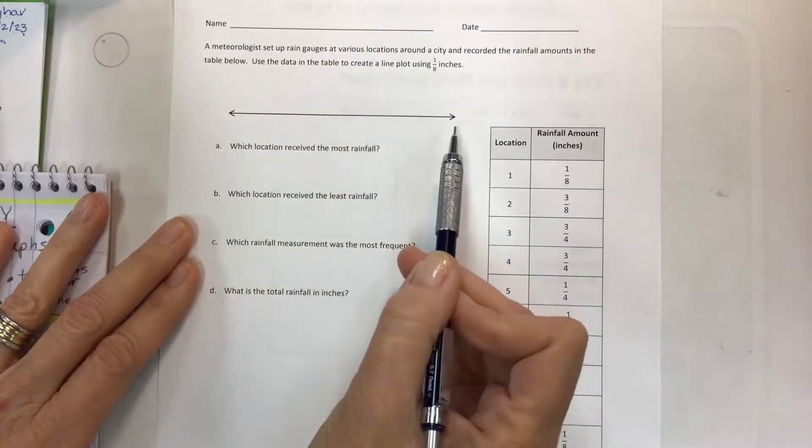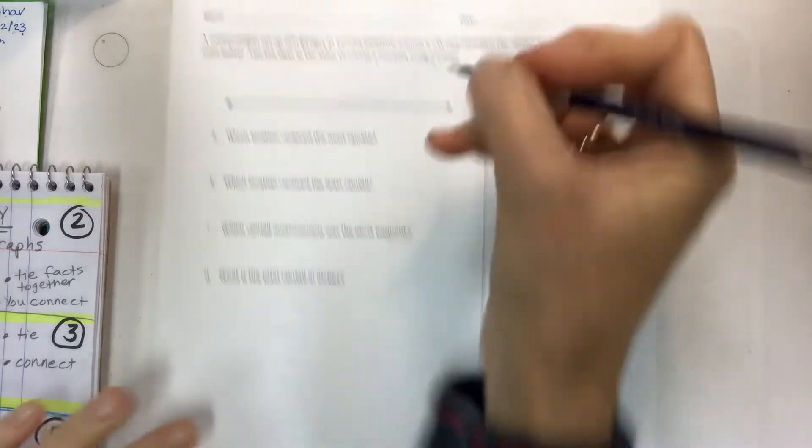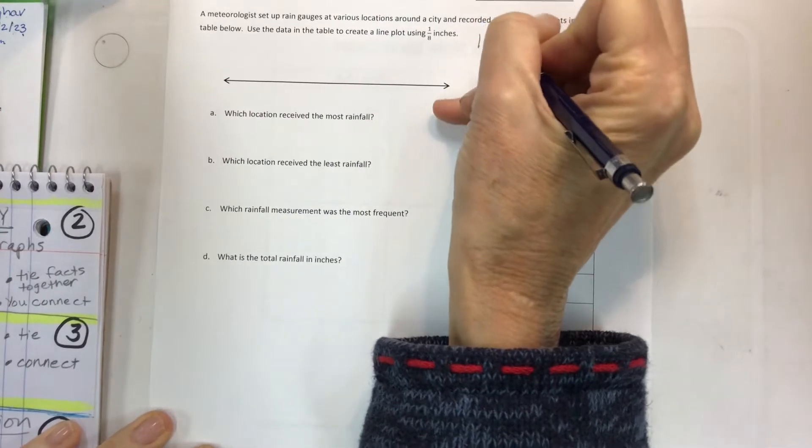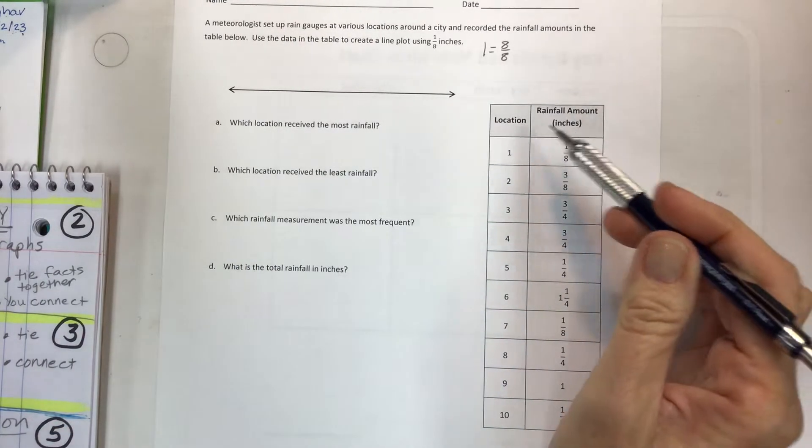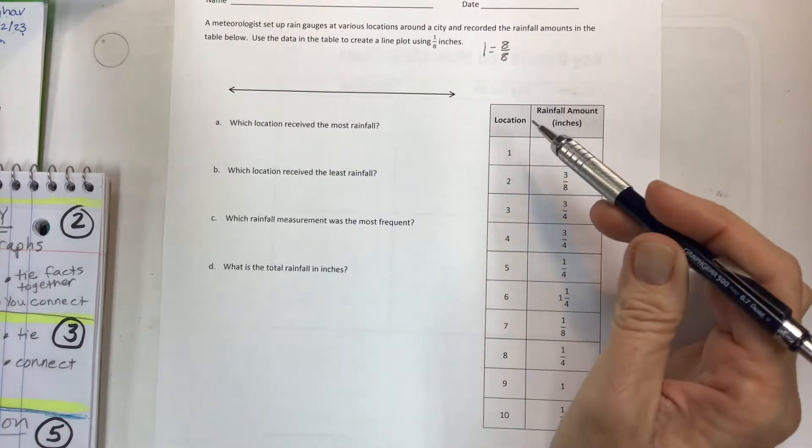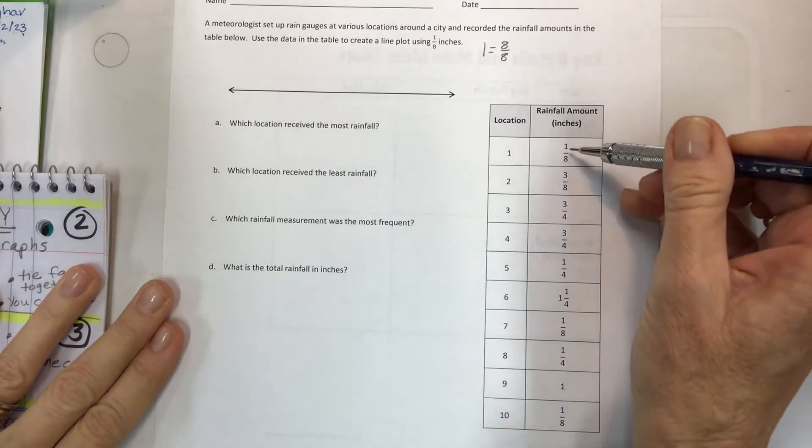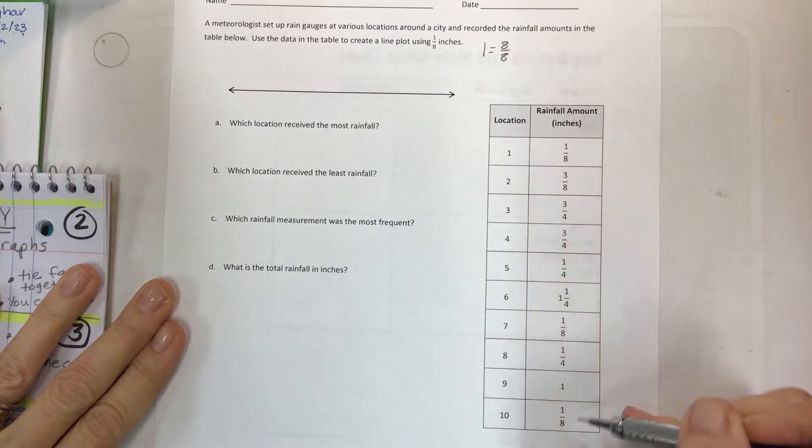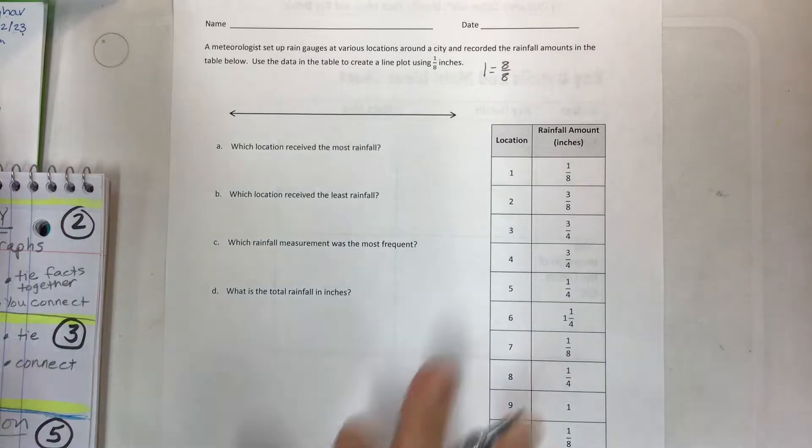Use the data in the table to create a line plot using 1 eighth inches. Here's the number line that they want you to work on, and we have to use 1 eighth inches as our minimum amount of tick marks between our holes. So one hole would be 8 eighths, and we're going to make all those eighths on our line plot. We have all these different locations listed by number, and then we have the rainfall amounts.